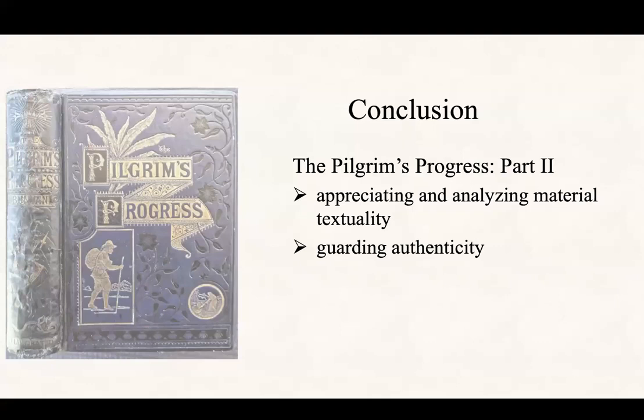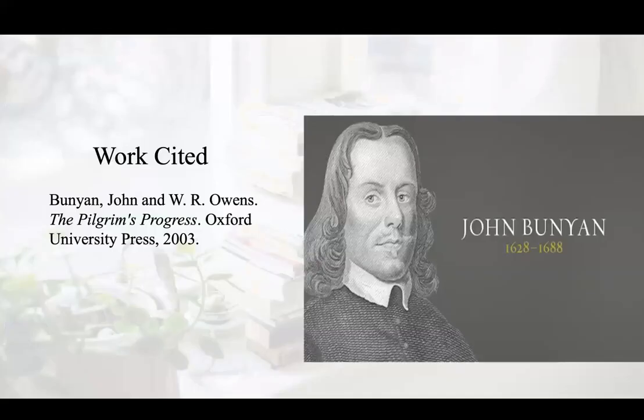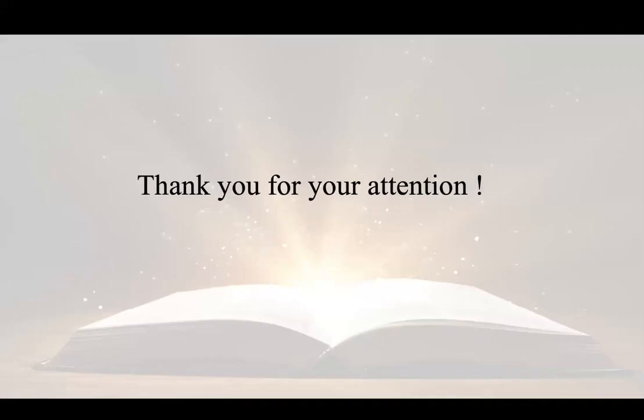In conclusion, we've talked about many aspects of material textuality concerning the second half of The Pilgrim's Progress, such as the front matter, frontispiece, title page, and apology. We've also learned some forms of marginalia, punctuation marks, illustrations, and the way to lay out the page. When dealing with piracy, we now could understand what John Bunyan has done to fight for the authenticity of the work. That's all — thank you for your attention.